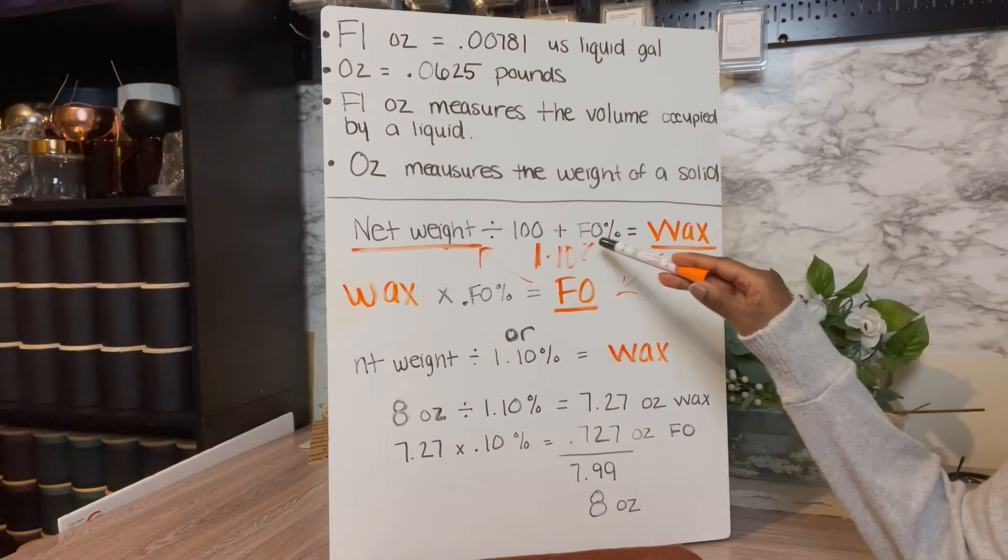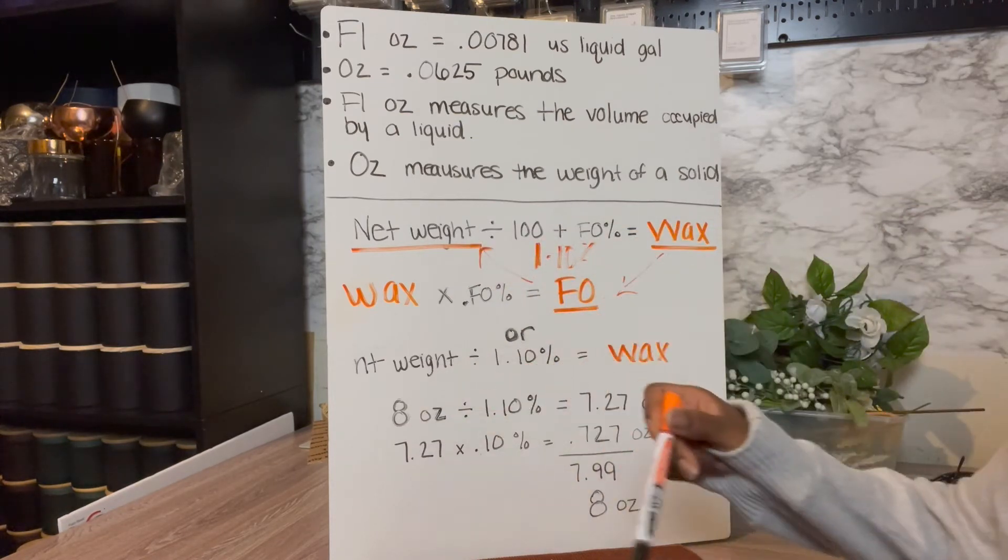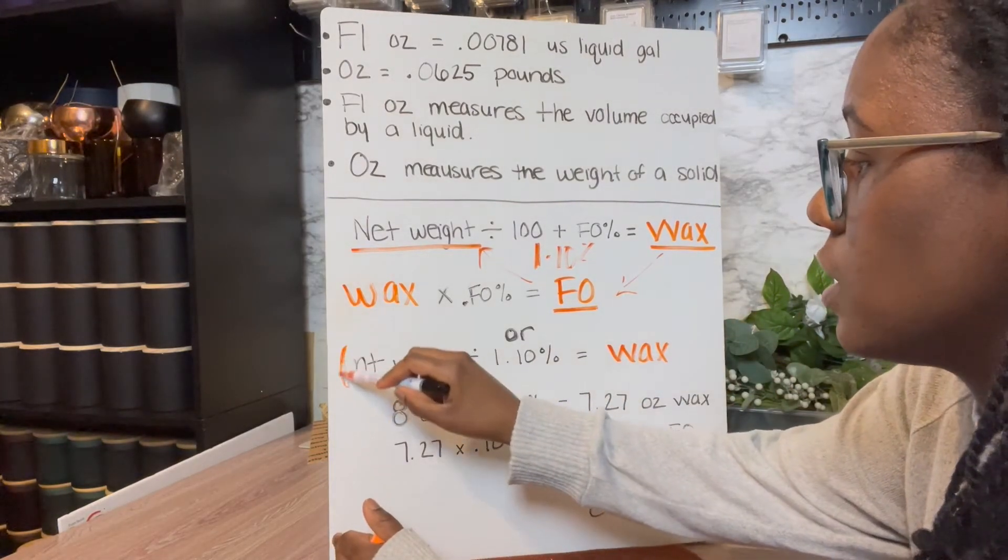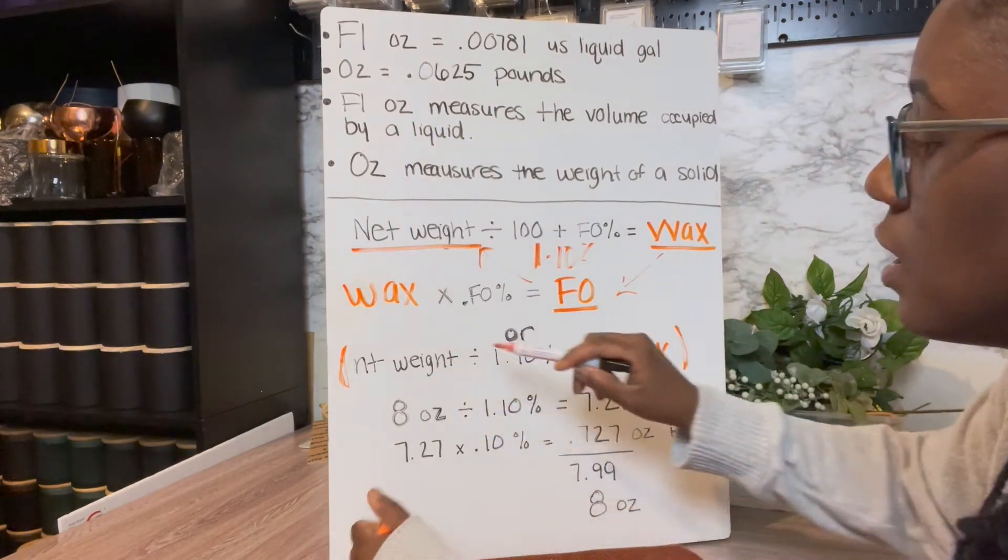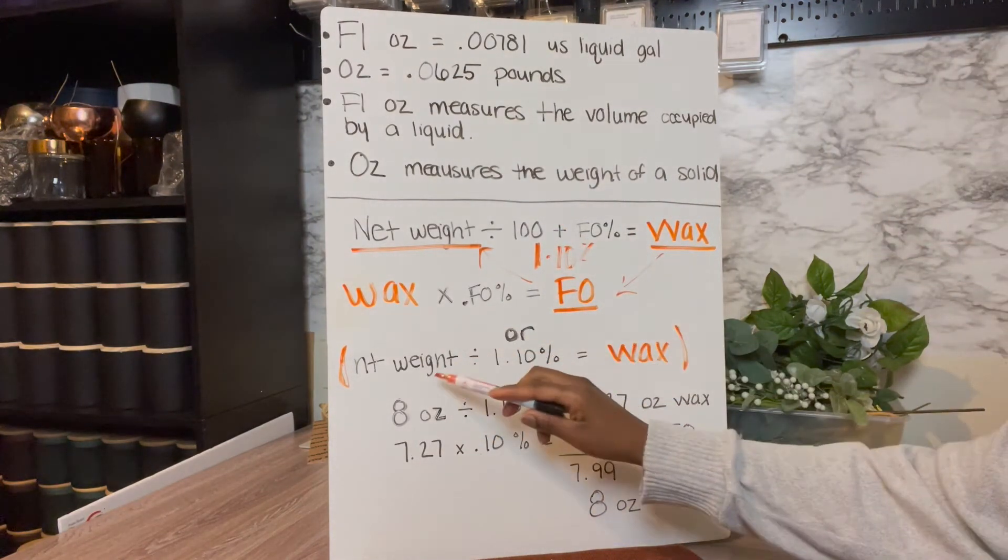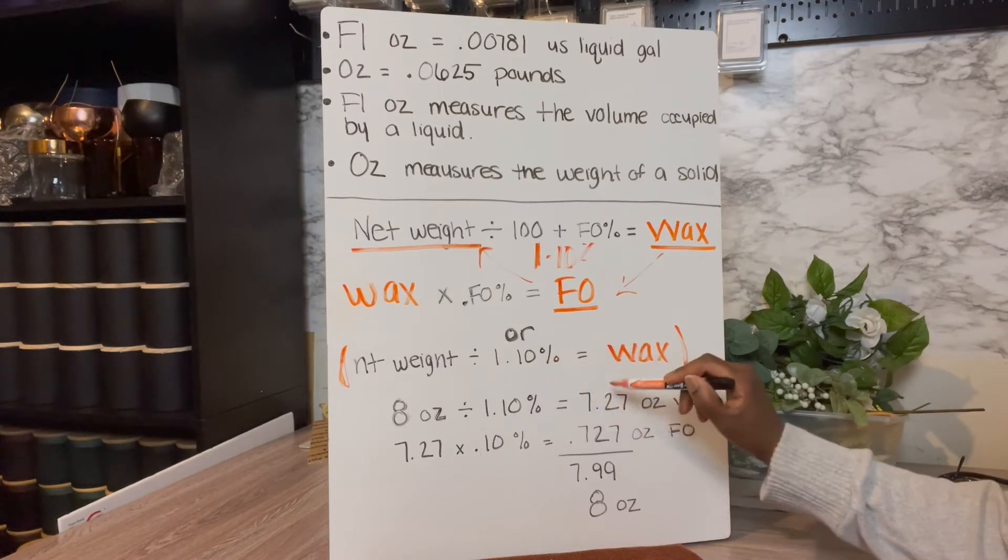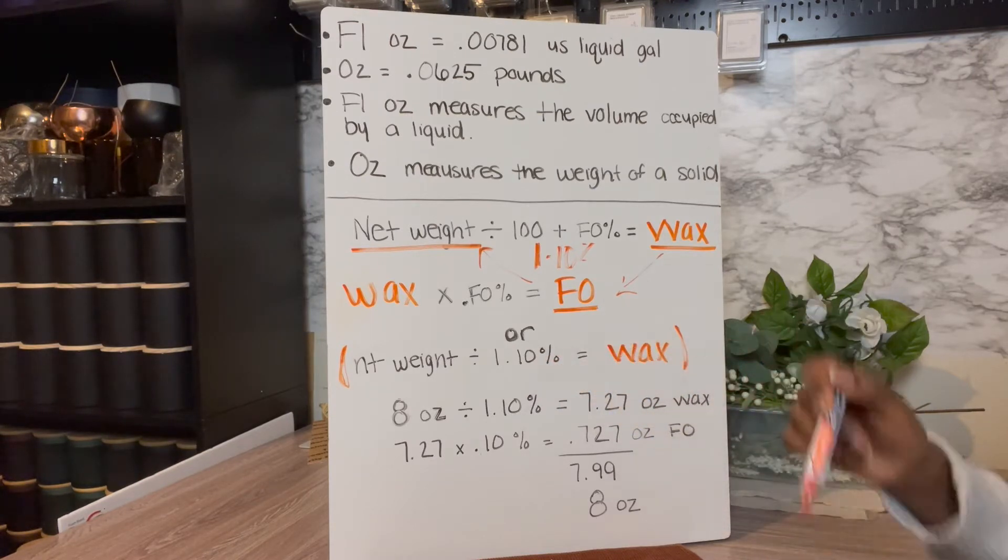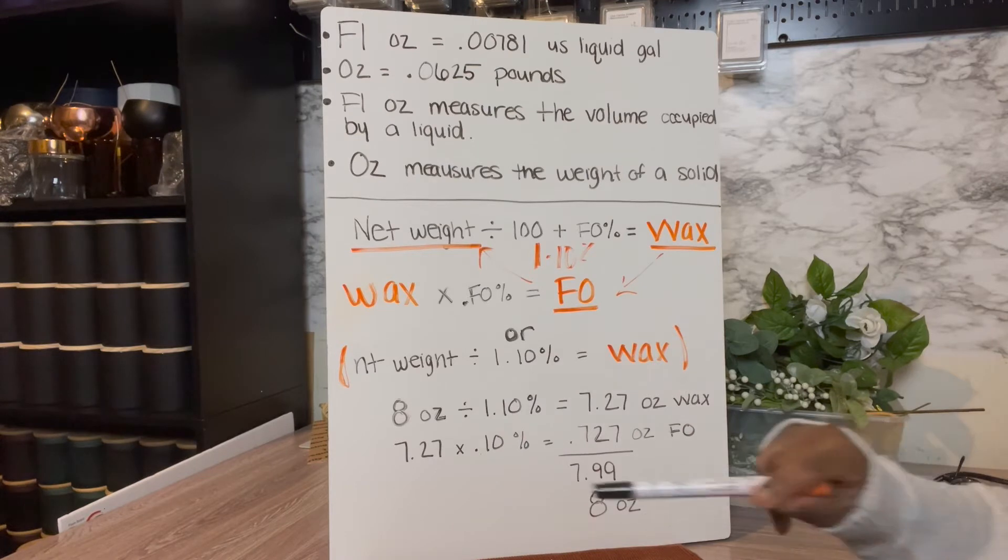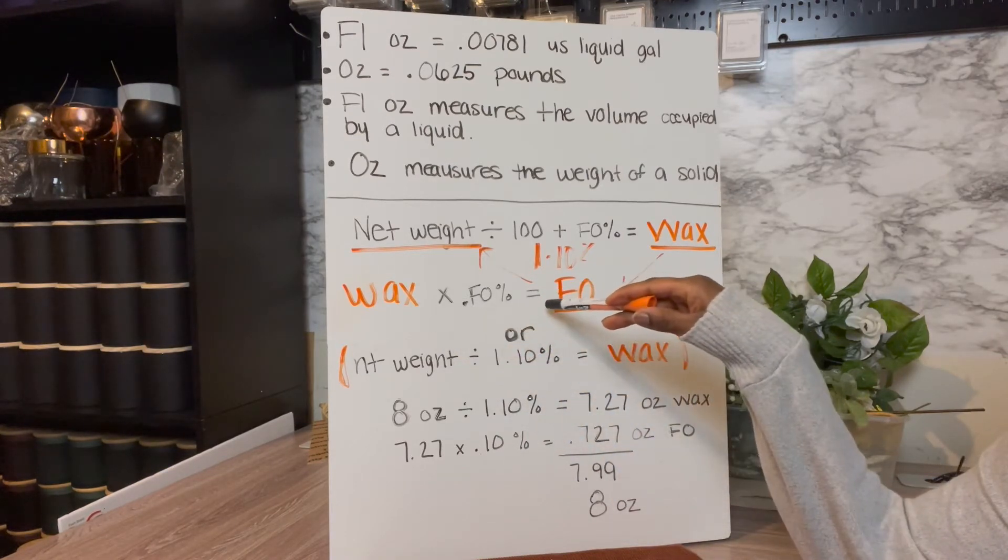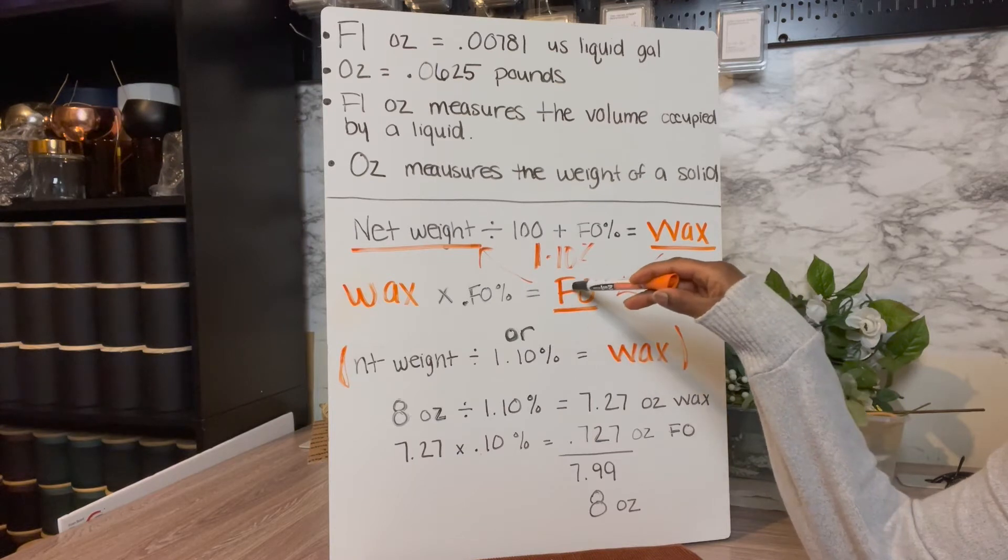So to break that down, you can see it down here. I wrote it down here. It doesn't really make much sense to have it way down here, but this is basically what this will look like. Net weight divided by one point whatever your fragrance oil percent is, and that will also equal your wax. So once you get your wax, you multiply it by your fragrance oil percent and that gives you your fragrance oil load.